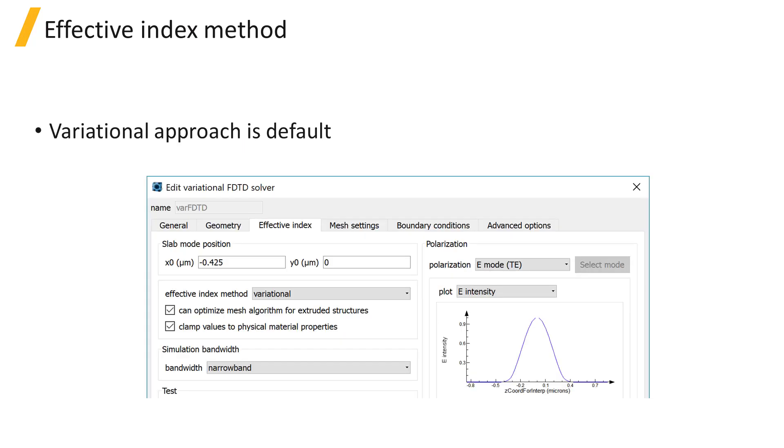The variational approach is the default. There is also an additional option in the settings to clamp effective index values to physical material properties, which sets the minimum and maximum allowable effective index values to the minimum and maximum refractive index of the materials of the 3D structure. This option is enabled by default. The default settings are typically good for most types of devices, so we don't often change these settings.